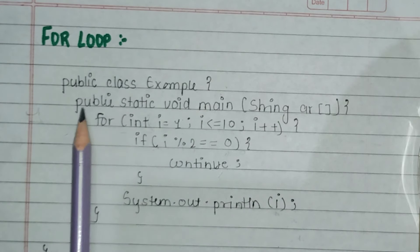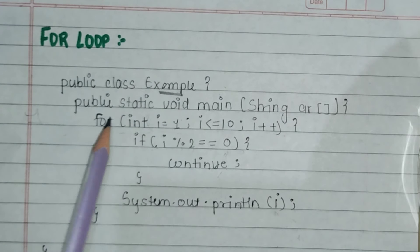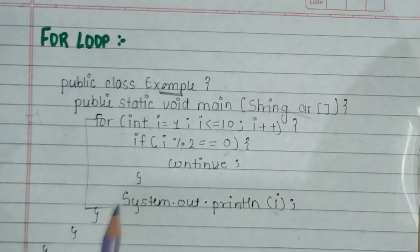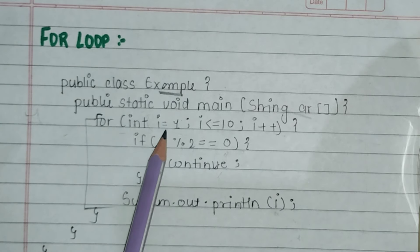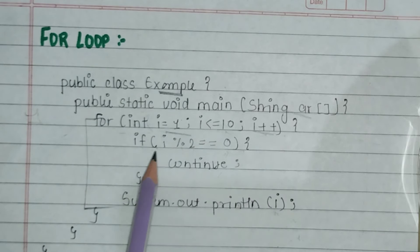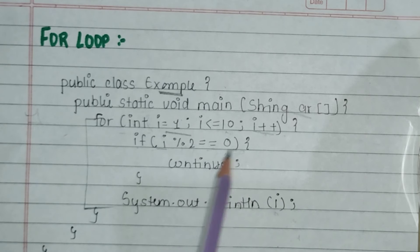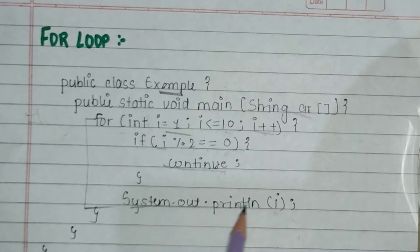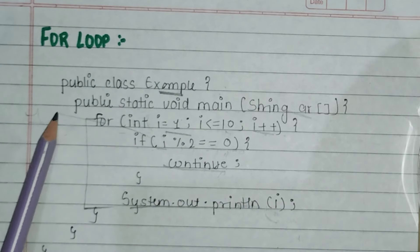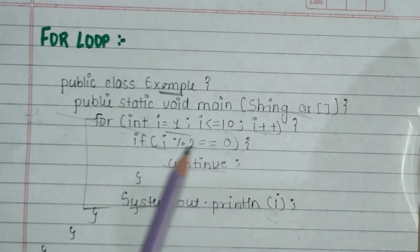Here we have a public class example with a simple for loop: for int i equals 1, i is less than 10, i plus plus. Inside, if i modulo 2 equals 0, we execute continue; otherwise, we print the value of i.